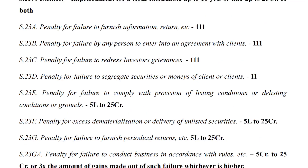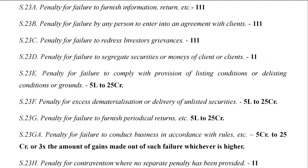Section 23D is a 'double one' penalty for failure to segregate securities or monies of clients. It carries a penalty of not less than 1 lakh rupees, which may extend up to 1 crore rupees. Here, the 1 lakh per day provision is not applicable.